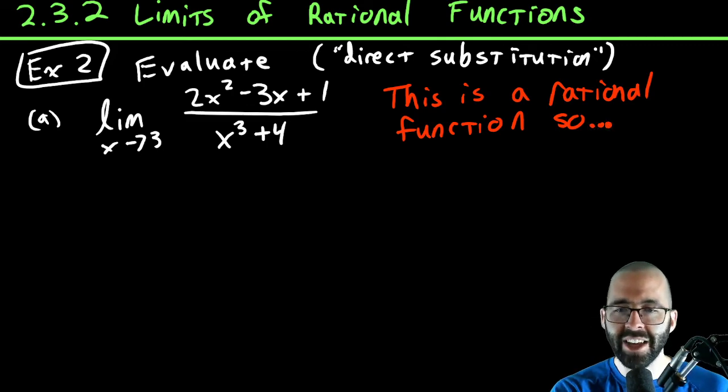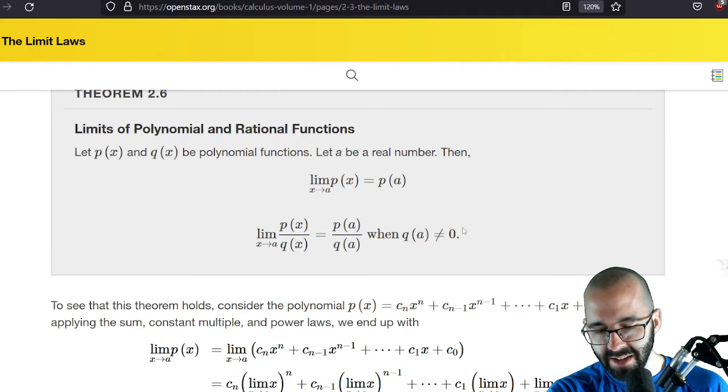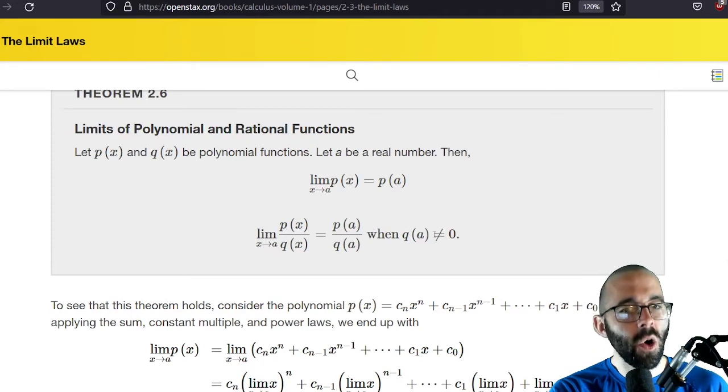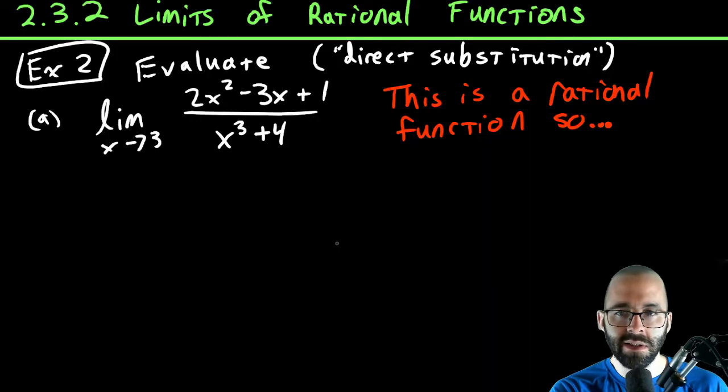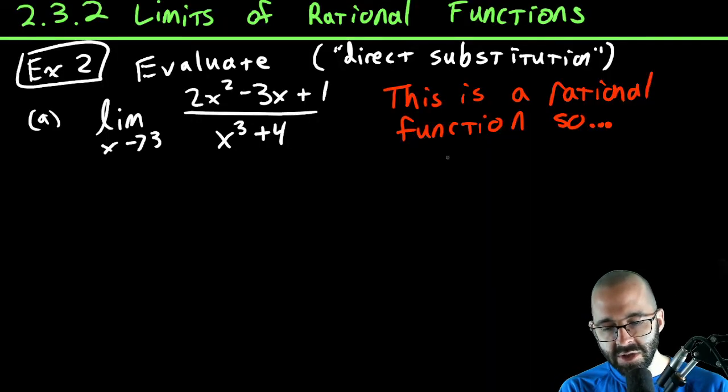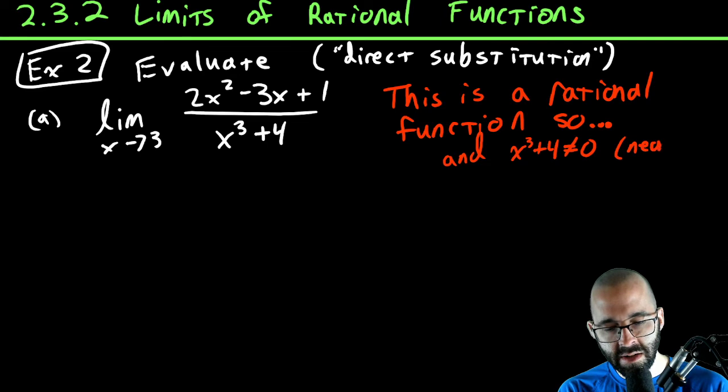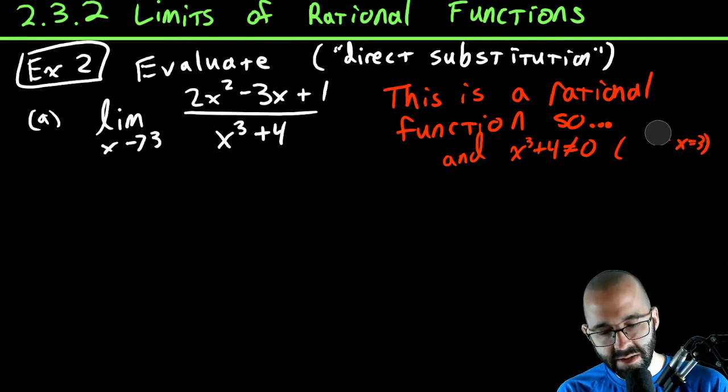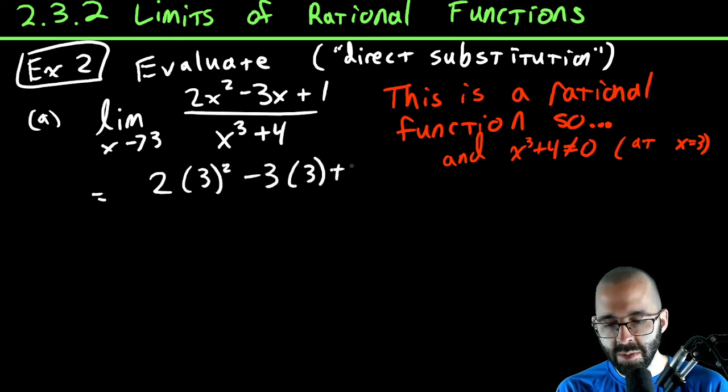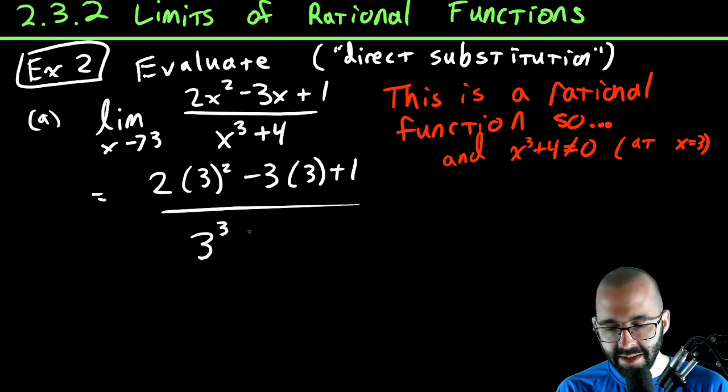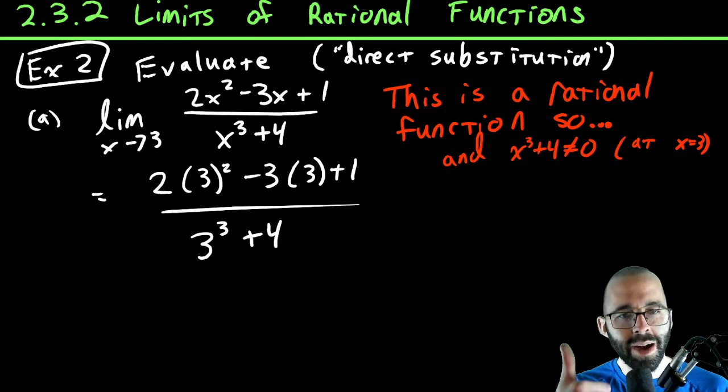We're going to say, okay, this is a rational function. And again, there was one thing I didn't make a big deal out of, but let's comment on it really quick. The second one for rational functions, it's only true when the denominator is not zero. If that denominator is equal to zero, this property does not work. This is a rational function, and x³ + 4 is not equal to zero near x equals 3 or at x equals 3.